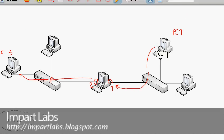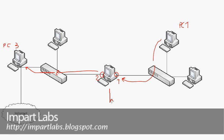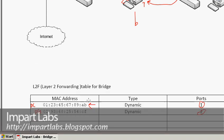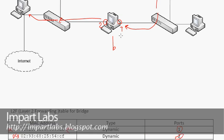If the packet is headed for the bridge itself, it first looks at the sender's MAC address and enters it in the table (or checks it off if already present), then processes the packet for itself.